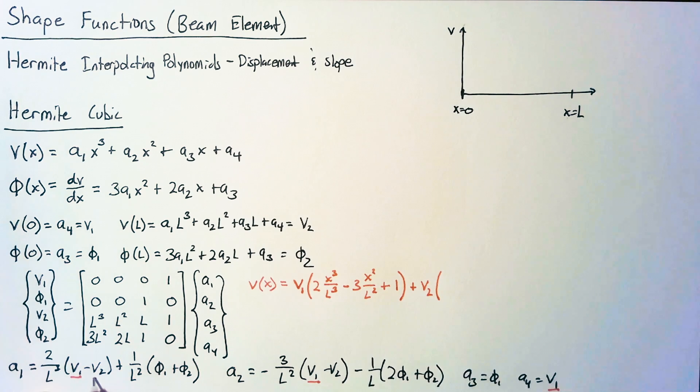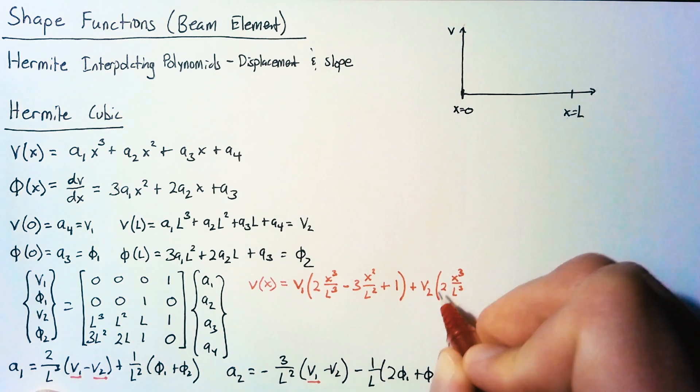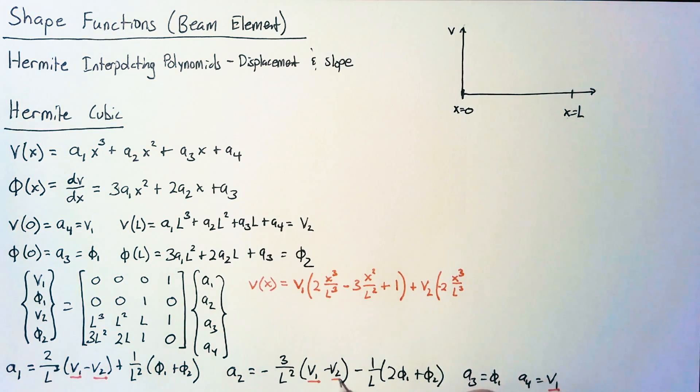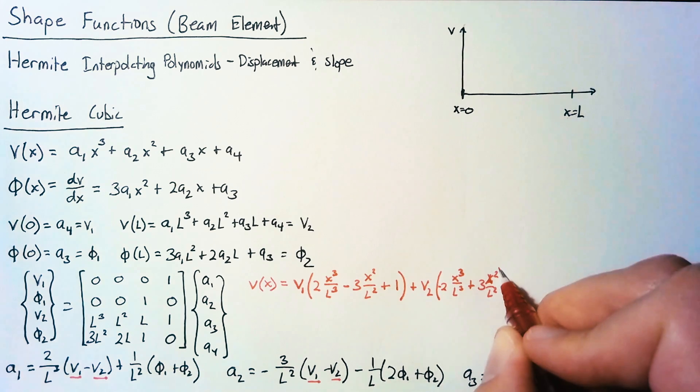v2, we have a term here, so again we have a 2x cubed over l cubed, this time with a negative sign. Then for v2, we have a 3x squared over l squared, this time positive, and that's it.